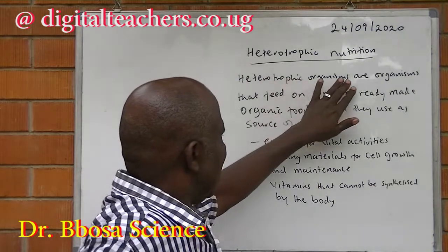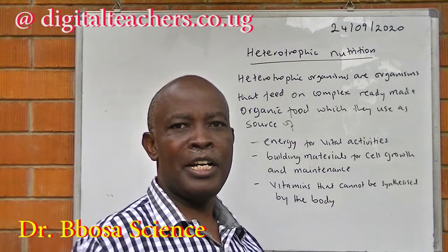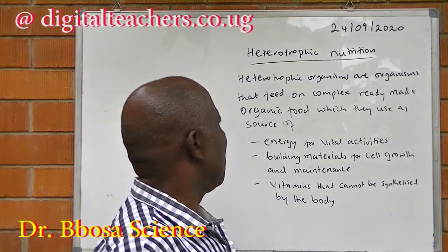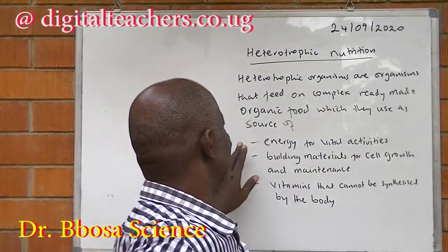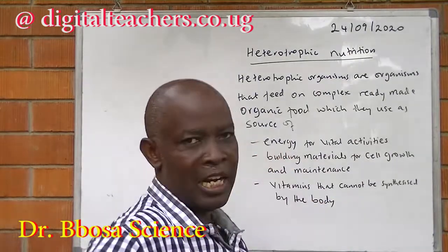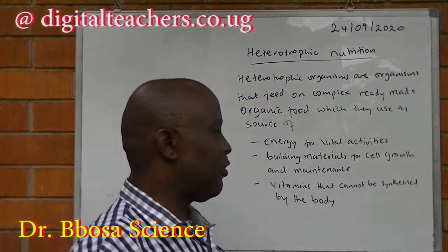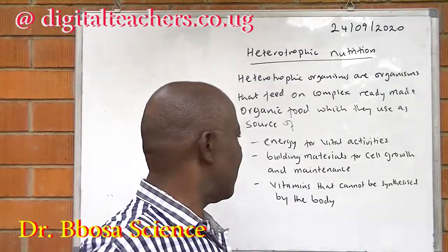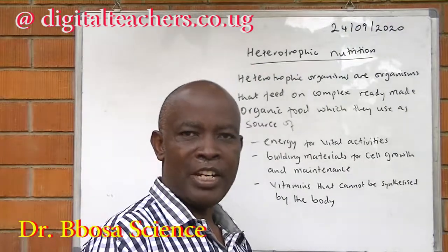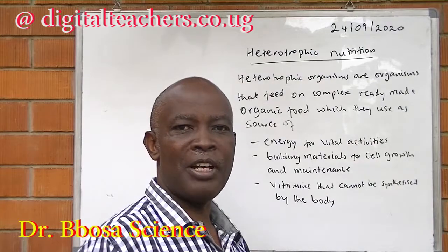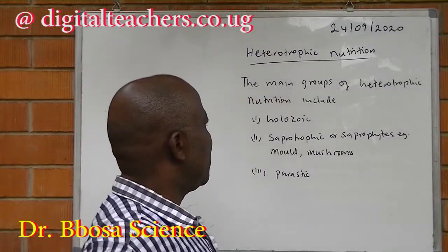Heterotrophic organisms are organisms that feed on complex, ready-made organic food. They use it as energy for vital activities. They get building materials for cell growth and maintenance. They also get vitamins and essential fatty acids that cannot be manufactured in the body.